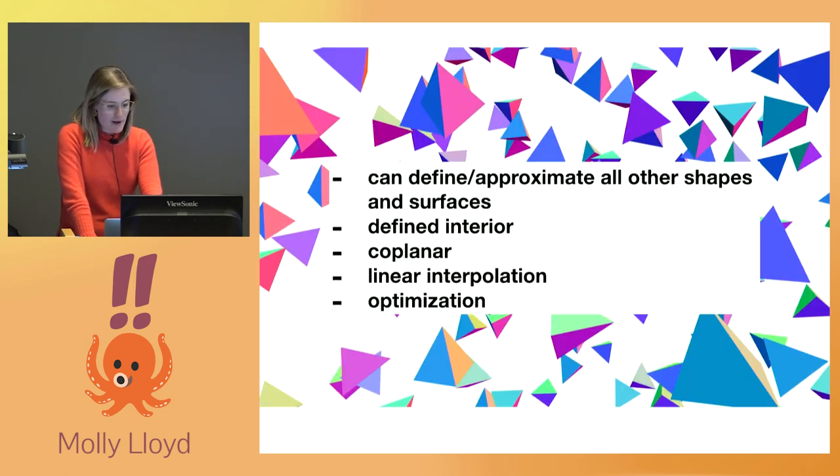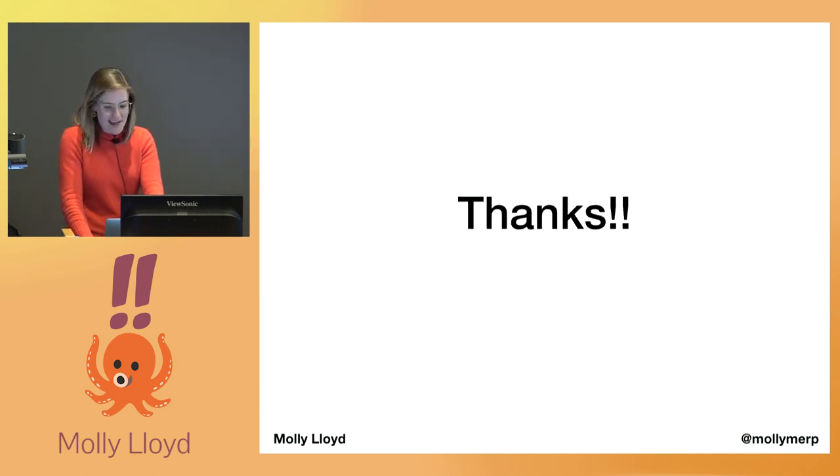So to recap, triangles are great and some reasons why include that they can define or approximate all other shapes and surfaces. They have a well-defined interior guaranteed to be coplanar. You can linearly interpolate across their surface. And most importantly, they allow you to be able to optimize for a single shape. Why is this not going? Okay. Thank you.